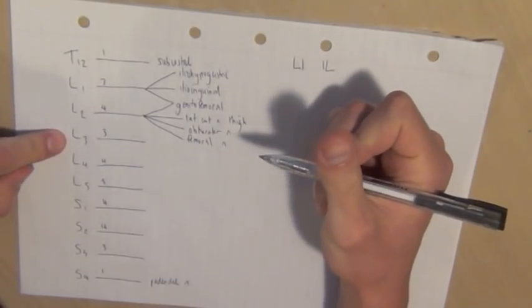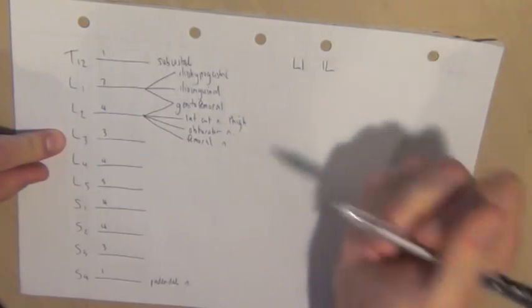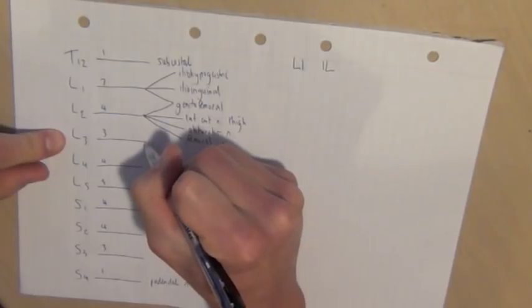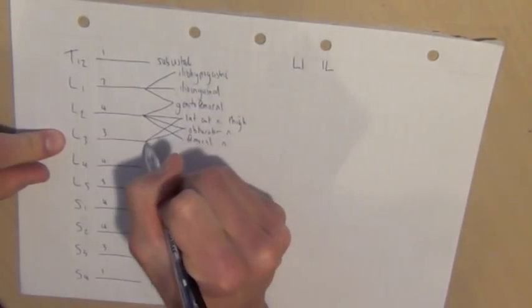L3, it's pretty hard living next to a good looking guy like L2 and not falling madly in love. So we've got three roots from L3, and they all go hang out with L2. As far as the lateral cutaneous, obturator and the femoral go.